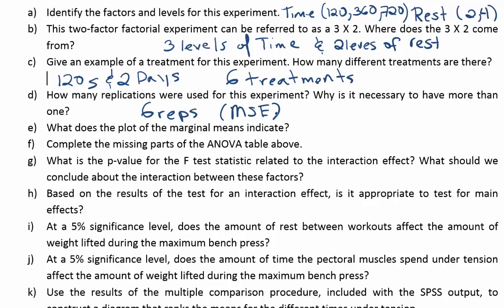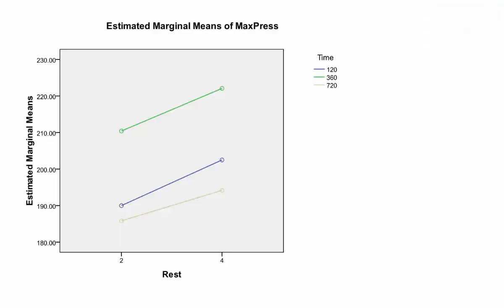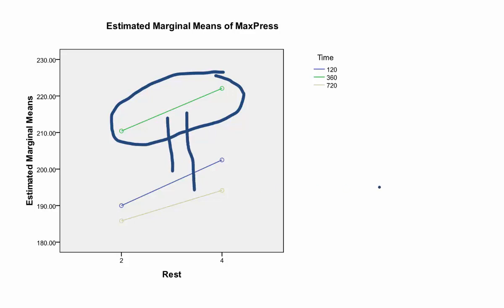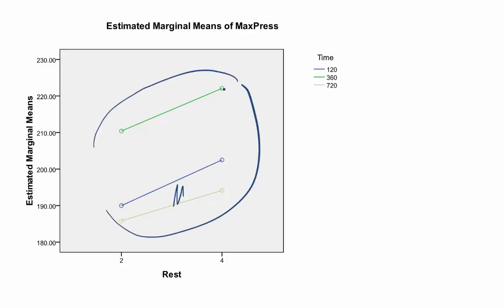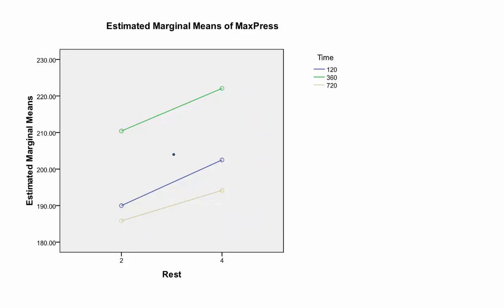Part E asks what the plot of the marginal means indicates. Looking at the plot, we can see that one line is significantly different from the other two — it's pretty far away, so there's likely a significant difference between those levels of tension. That line represents 360 seconds under tension, which appears significantly different from the other two levels. There may not be a difference between those two, but 360 seconds under tension seems to stand apart. You're looking for separation between the lines.